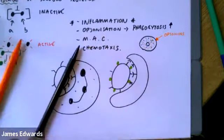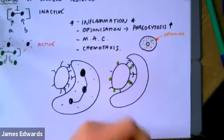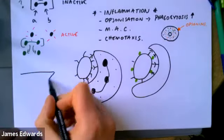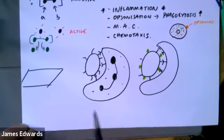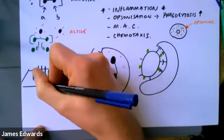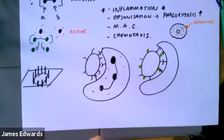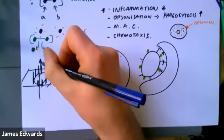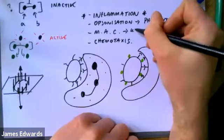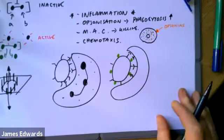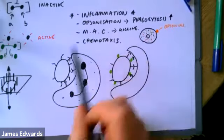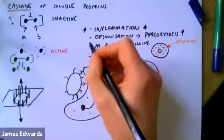The membrane attack complex is a series of proteins that polymerize in a big circle on the surface of the bacterial cell, forming in effect a hole punch, and fluid begins to leak out. It's a useful way of basically killing bacteria. It has to be triggered — it doesn't automatically form — but because this is a cascade reaction, it's just one of the outputs.